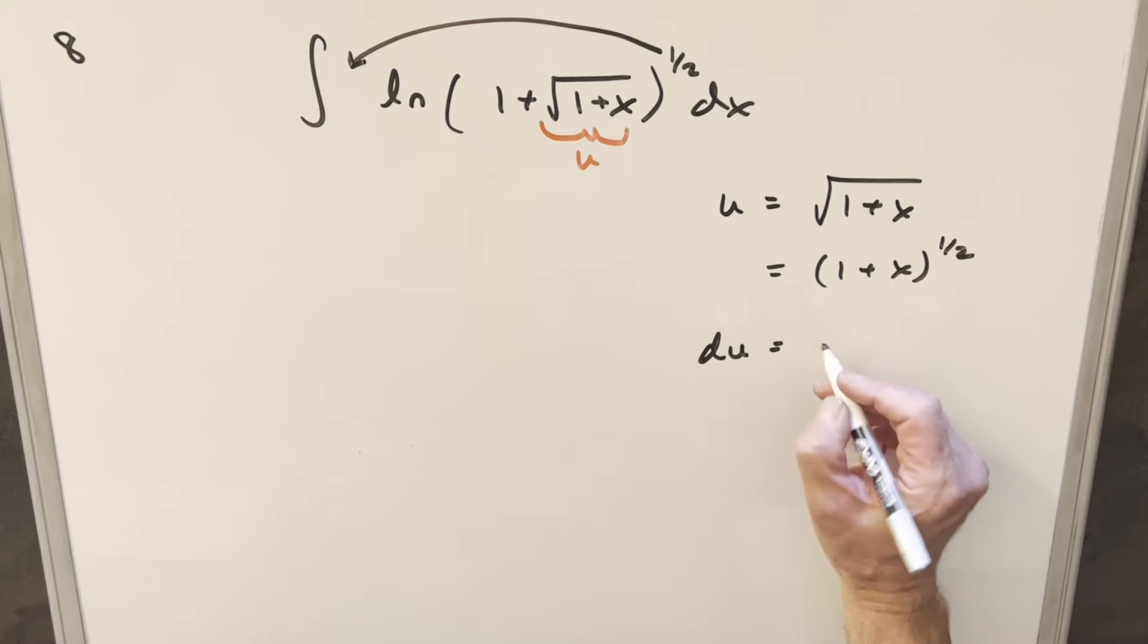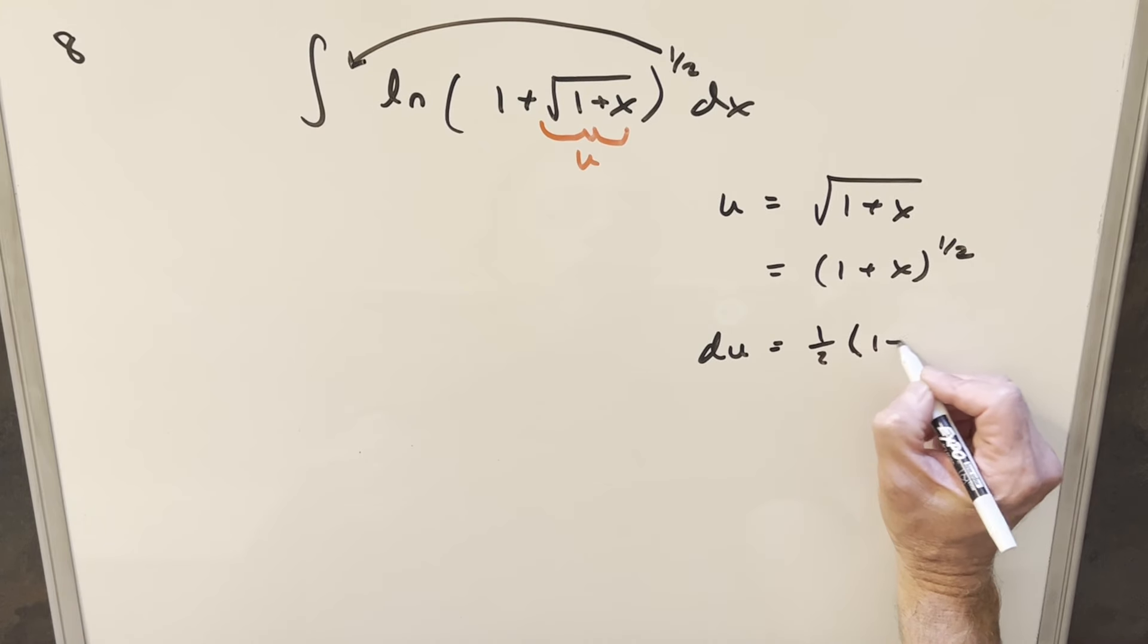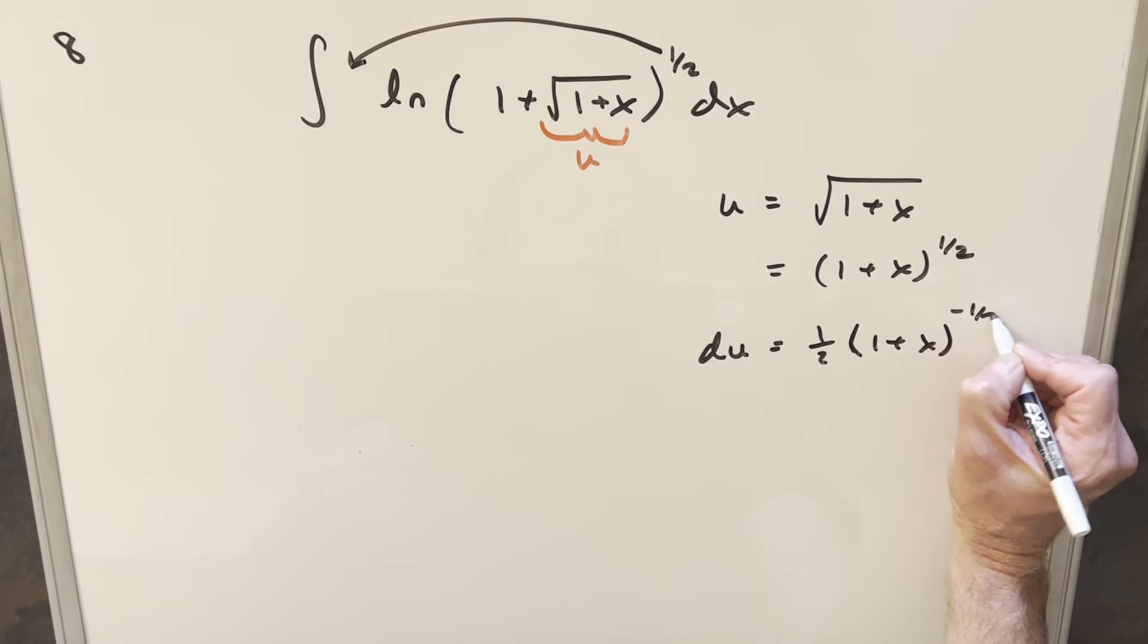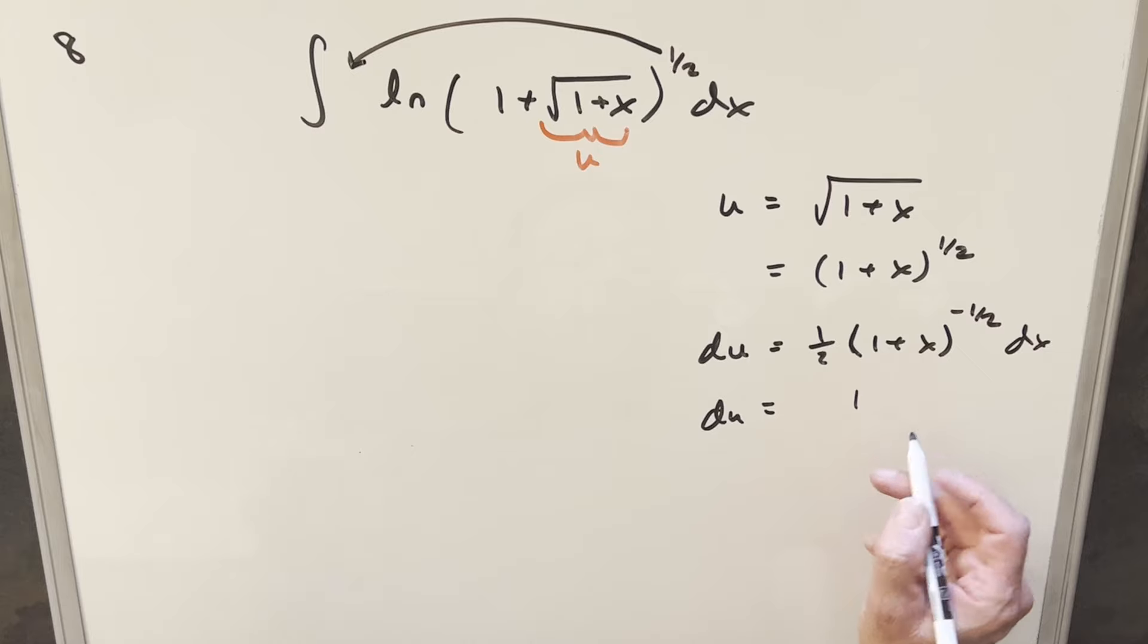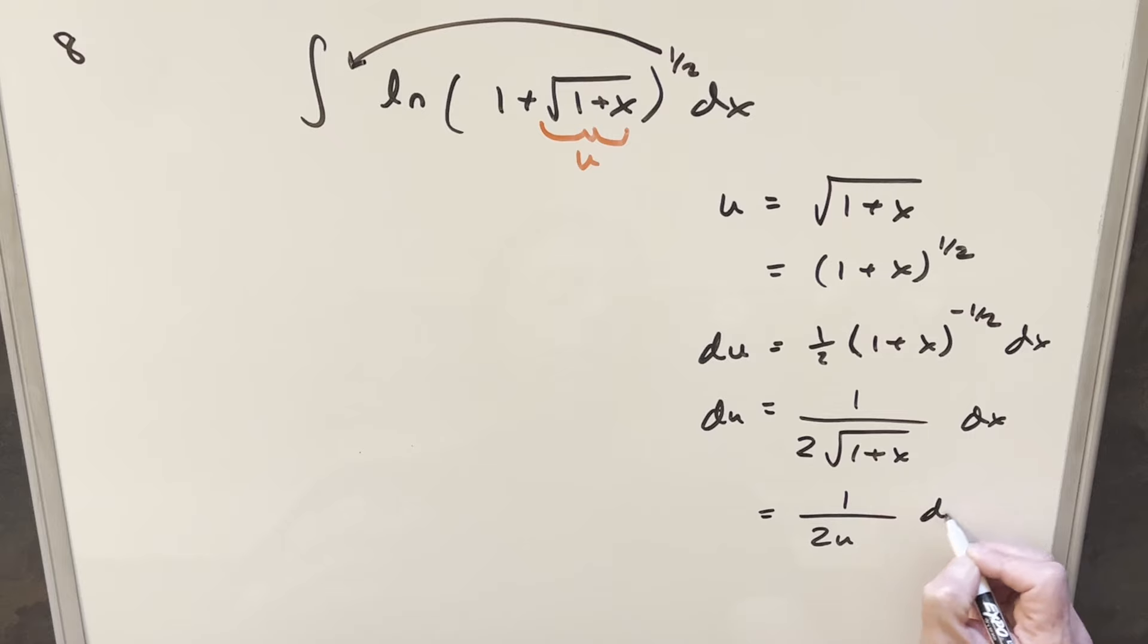So for du power rule, we bring the 1 half in front, 1 plus x, and this becomes minus 1 half. Chain rule on this is just going to be 1, and we'll have a dx on the end. But what I can do to rewrite this, this is a negative power. We can write this as 1 over 2 square root 1 plus x. But square root 1 plus x is just u, so this thing I can write as 1 over 2u dx.